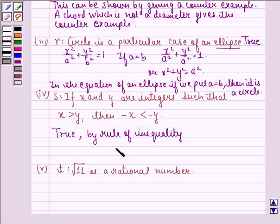So if we have the statement x is greater than y, now according to a rule of inequality, if both sides of an inequality is multiplied or divided by same negative number, then the inequality is changed. So when we multiply by minus 1, we get -x is less than -y. Therefore, the statement is true.